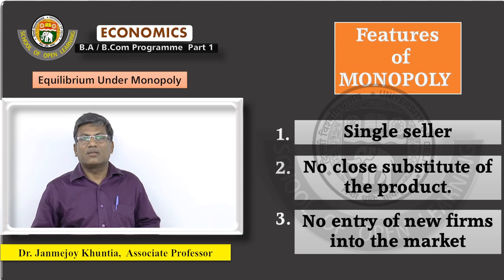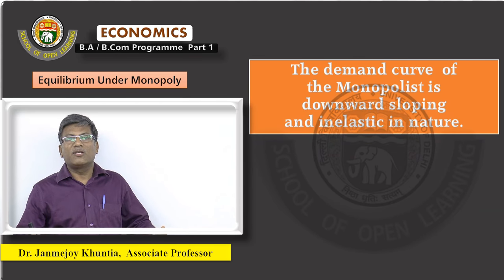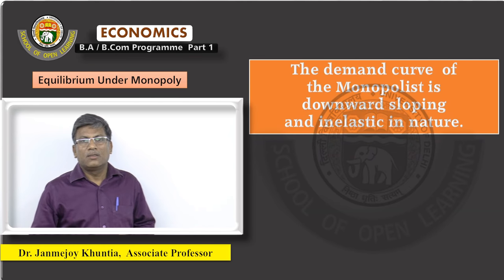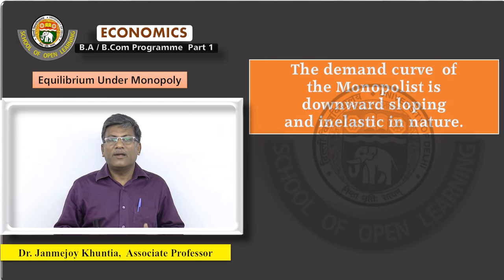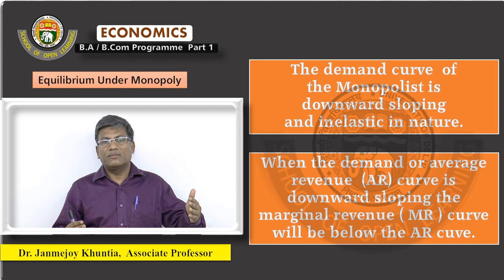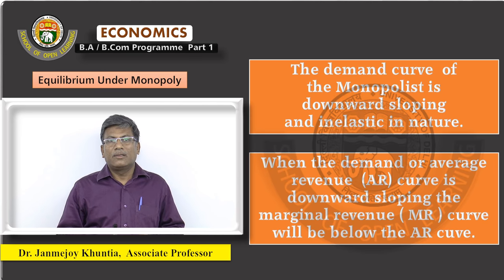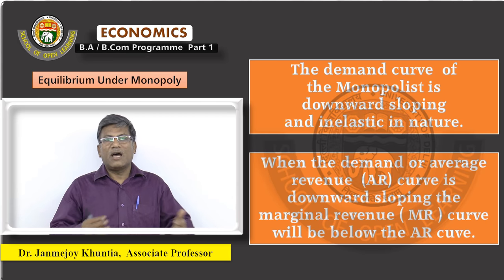Under such a situation, the Demand Curve of the Monopolist is Downward Sloping and Inelastic in Nature. When the Demand Curve or the Average Revenue Curve is Downward Sloping, the Marginal Revenue Curve will be below the Average Revenue.